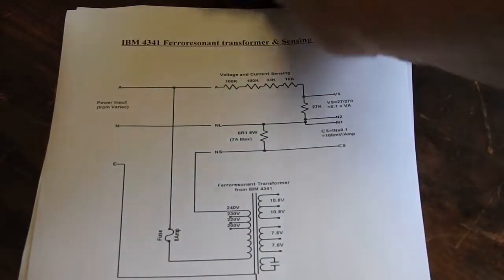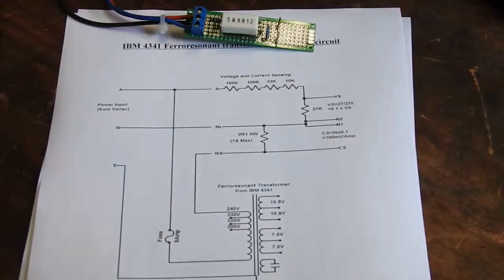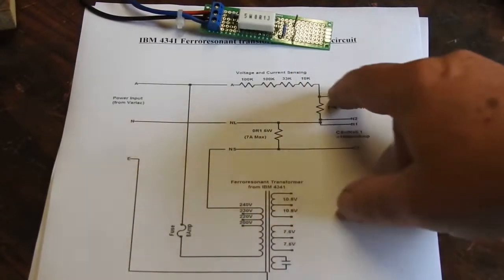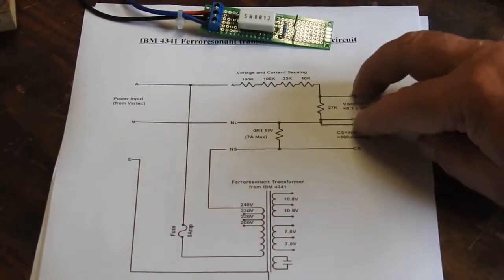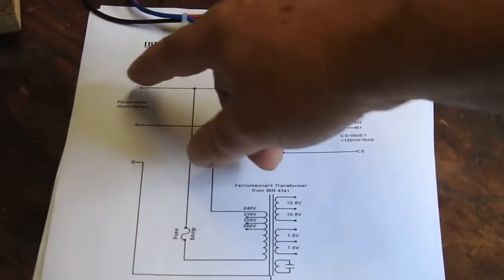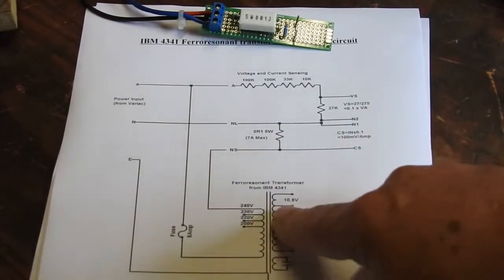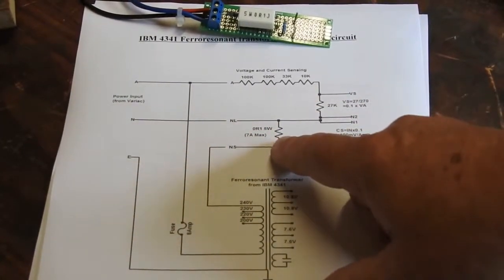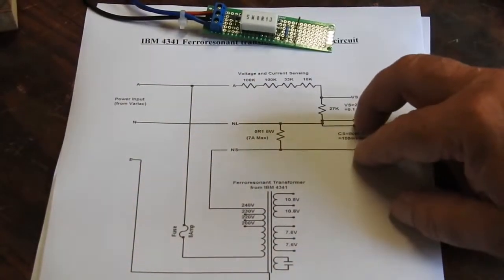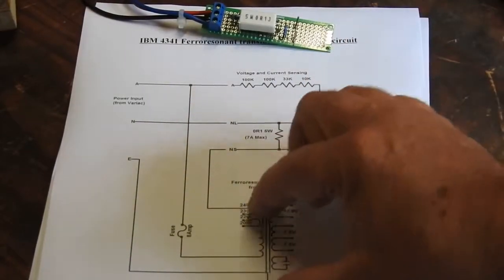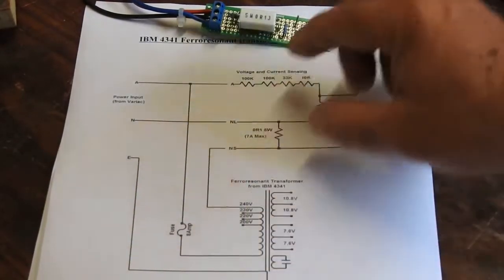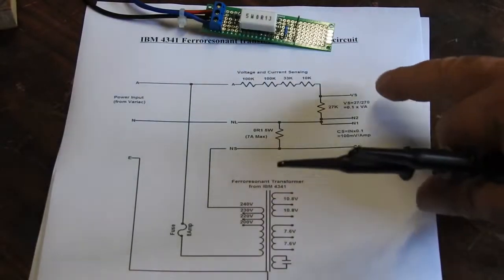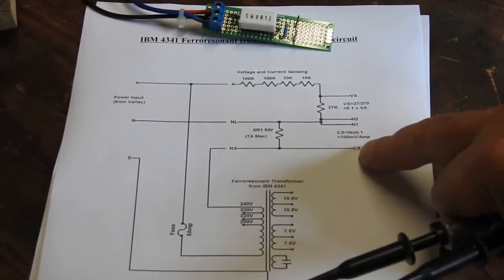Now to measure voltages and currents, I built up this little circuit here which consists of a bunch of resistors totaling 270K with the last one being 27K, so the voltage there is one tenth of what goes in there, which is connected to the active and goes to the transformer. The neutral also goes to the transformer via a 0.1 ohm 5 watt resistor so we can measure the current across that.